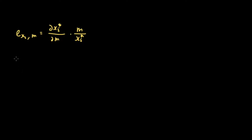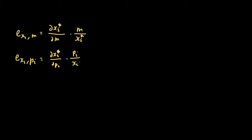The price elasticity of demand is denoted by e x sub i comma p sub i, which is equal to the partial derivative of x sub i star with respect to p sub i, multiplied by p sub i over x sub i star. Saying that this is simply the price elasticity of demand is not actually accurate — this is what we call the own price elasticity of demand, because there are actually two types of price elasticities and this is one of them.